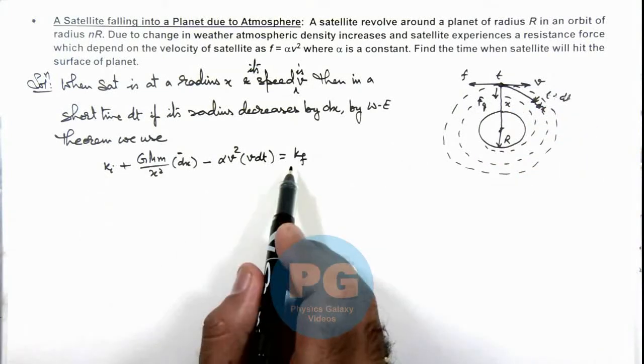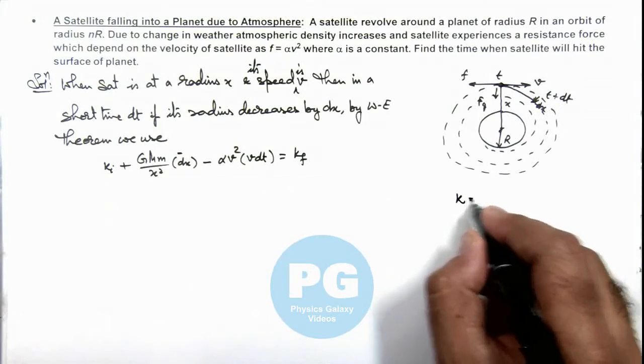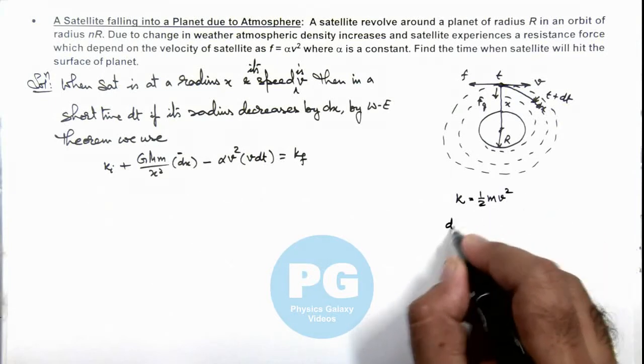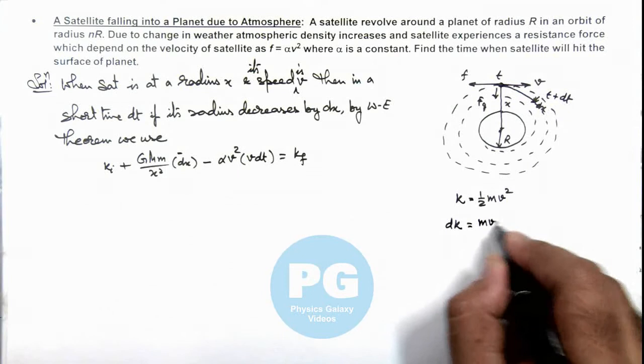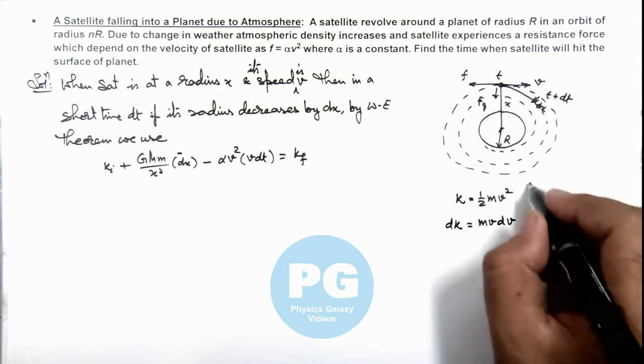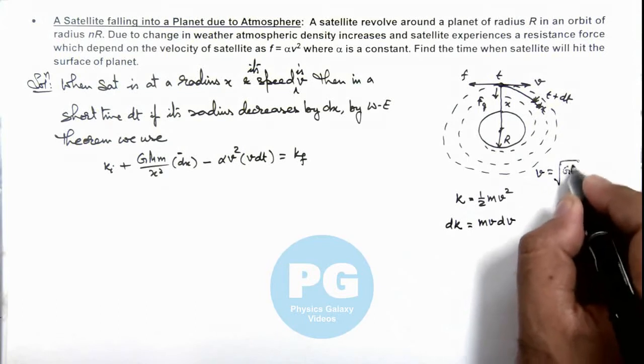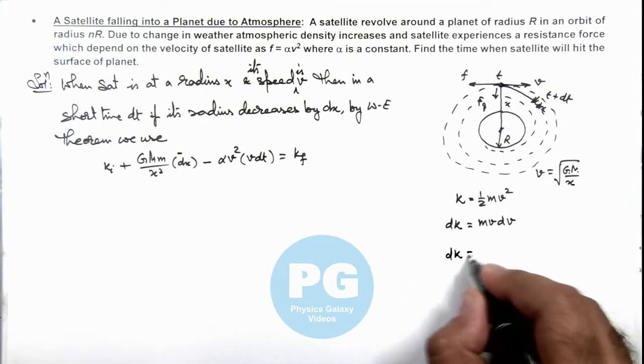So in this situation, the difference of kinetic energy can be calculated like this: if kinetic energy we consider as ½mv², and dk, the change in kinetic energy we can write as mv dv. And the value of speed in an orbit of radius x, we know it is √(GM/x).